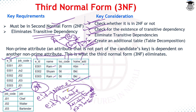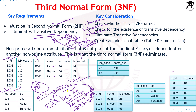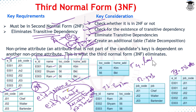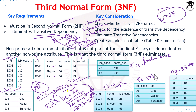To eliminate this transitive dependency, we further split the relation. From the original 2NF tables we create additional tables: an employee table, a job table, a job assignment table, and a location table — resulting in four tables total after full normalization to 3NF.